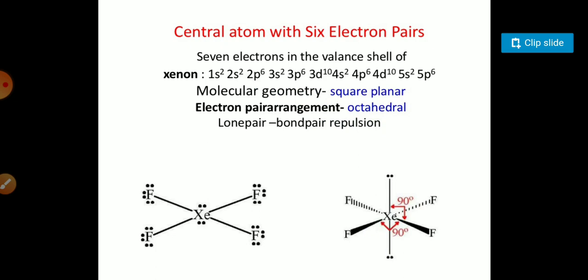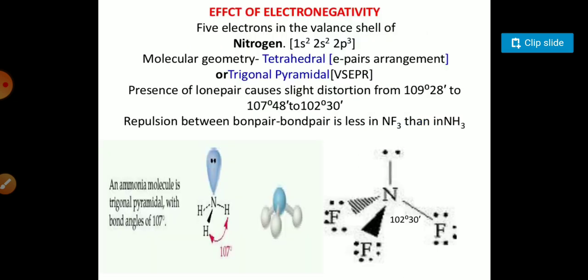The next is central atom with six electron pairs, like XeF4, having molecular geometry as square planar and the electron pair arrangement is octahedral. So the lone pair-bond pair repulsion is present in this kind of compounds.